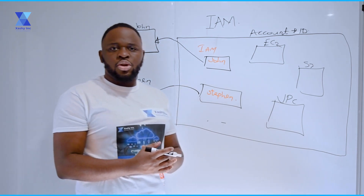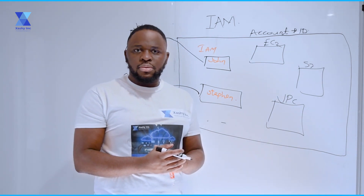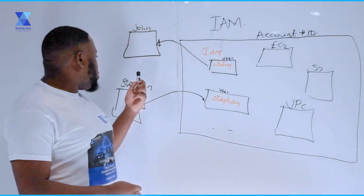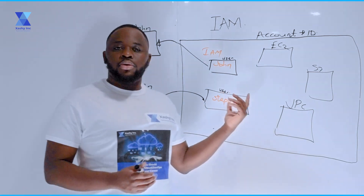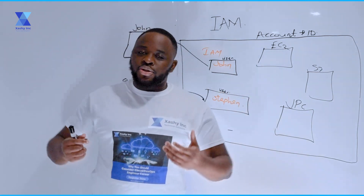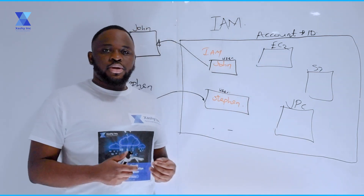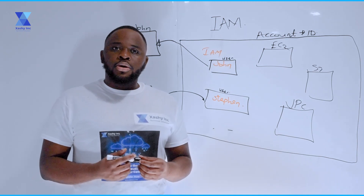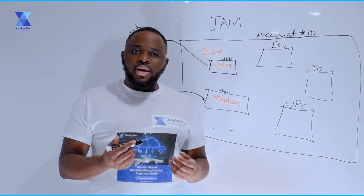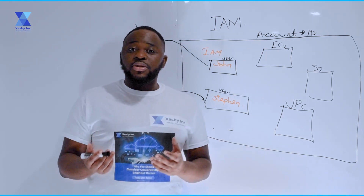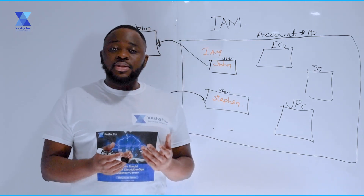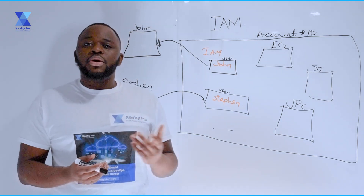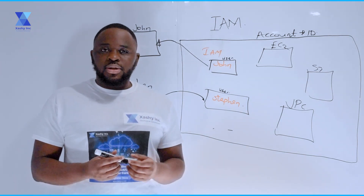The process of giving John and Stephen access to their account is done through authentication. When we talk about authentication, we simply mean it's the process of validating that an identity is actually who they say they are.